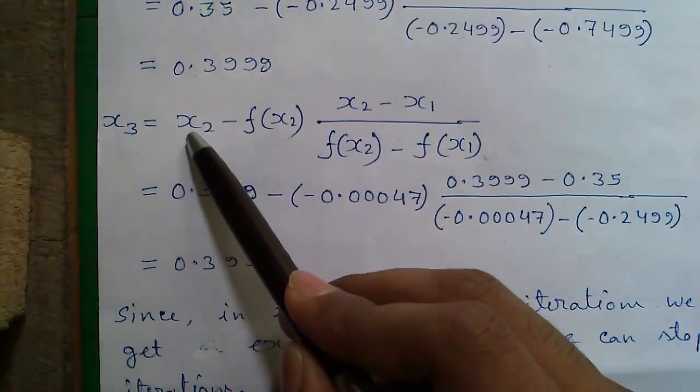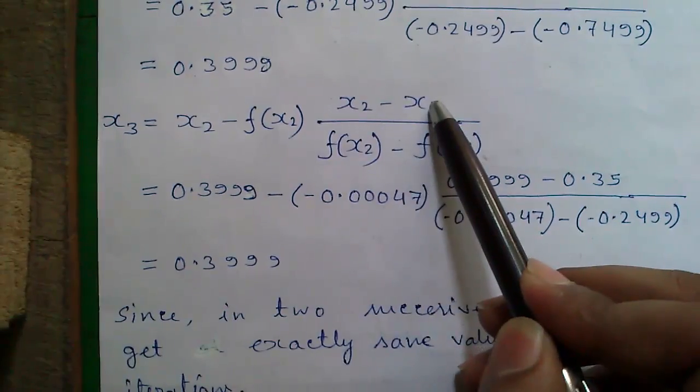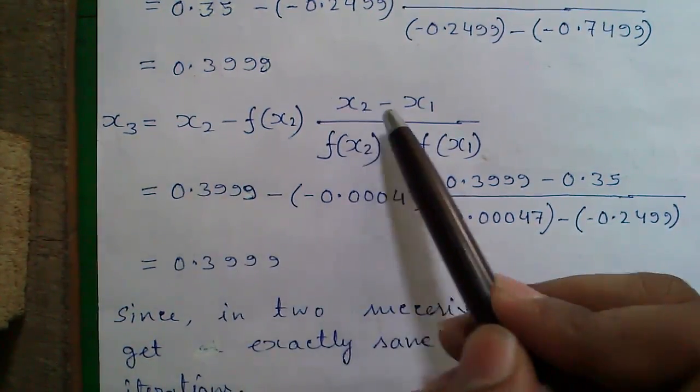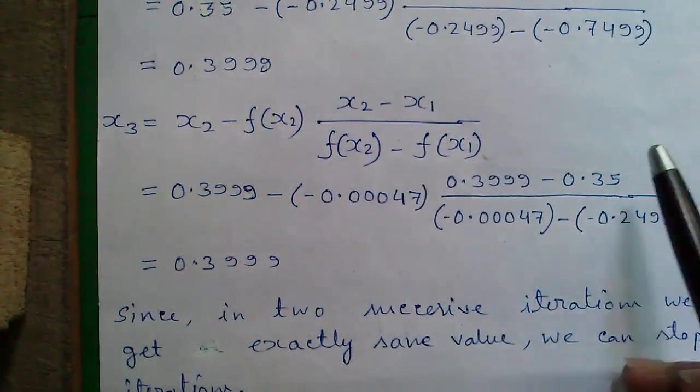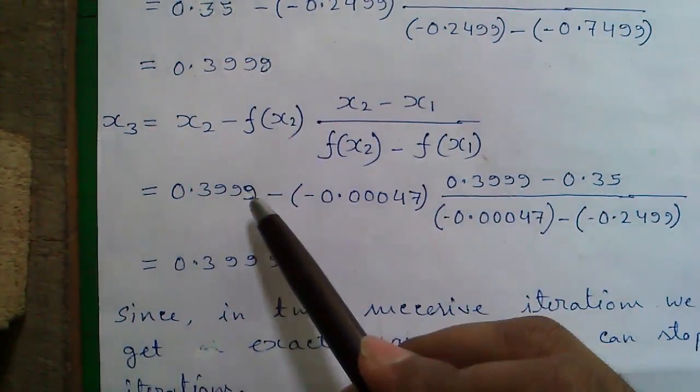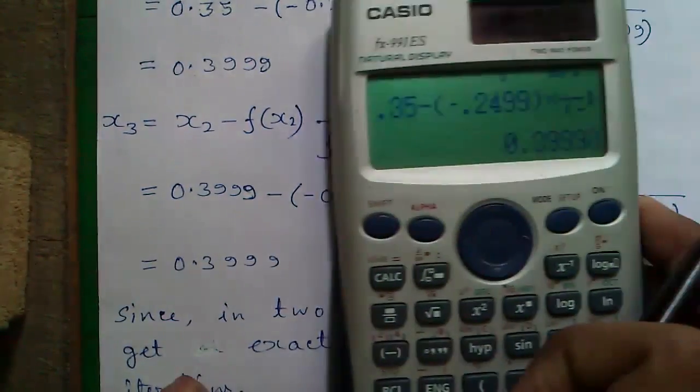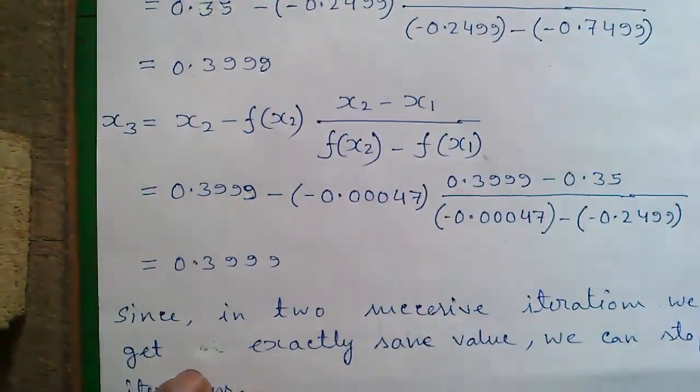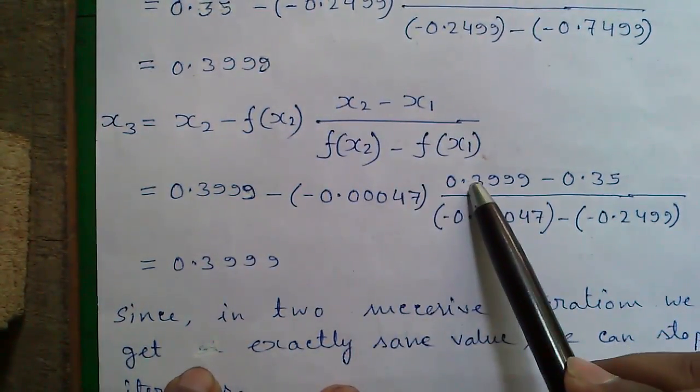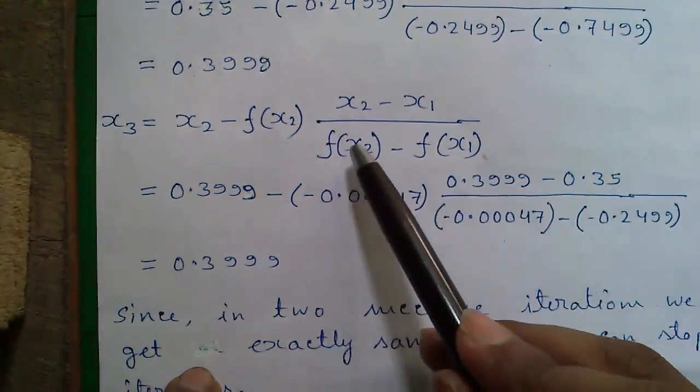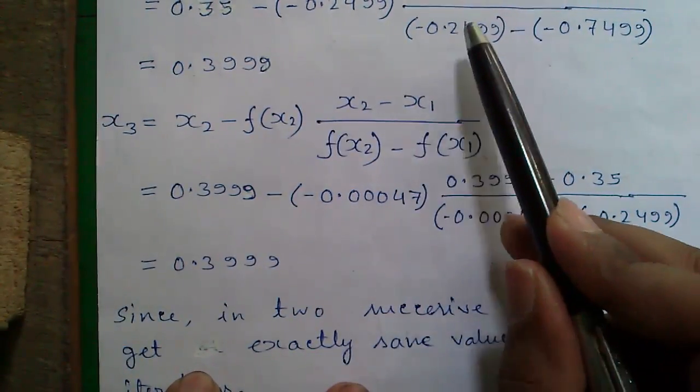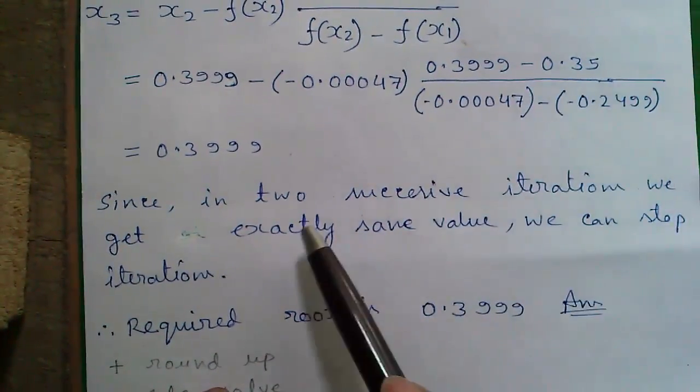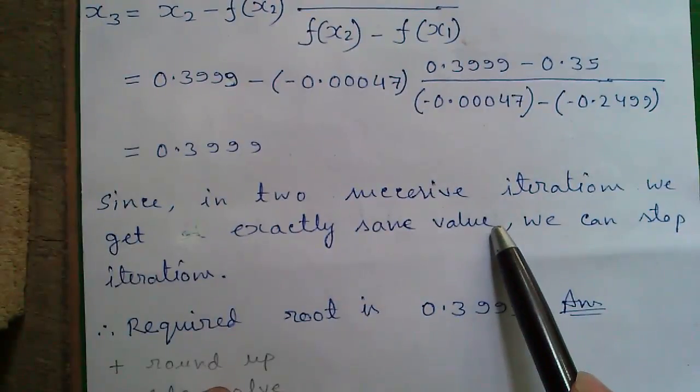Similarly, for x3, it will be x2 minus f of x2 times x2 minus x1 divided by f of x2 minus f of x1. For each iteration, we will use the previous iterations values. For x3, we will use x2 and x1 values and so on. So that will become x2 is 0.3999 minus f of x2 is 0.00047 into x2 is 0.3999 minus x1 is 0.35, f of x2 is this value and f of x1 is 0.2499 we got earlier that is minus 0.2499 so that will give you 0.3999.